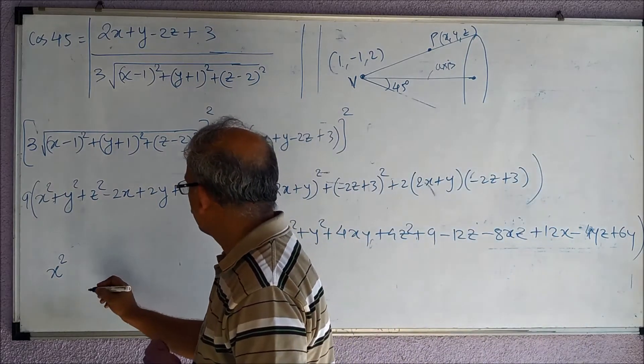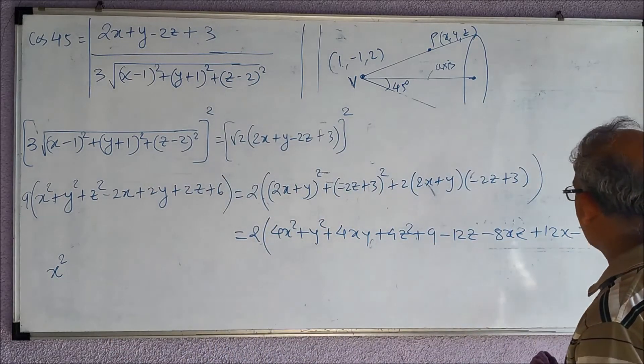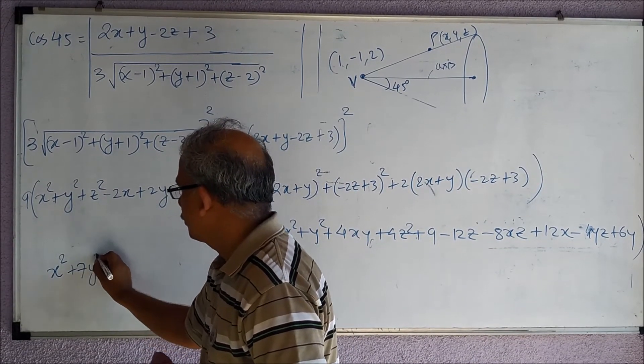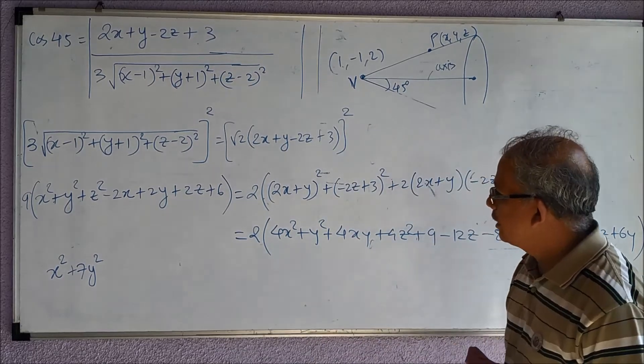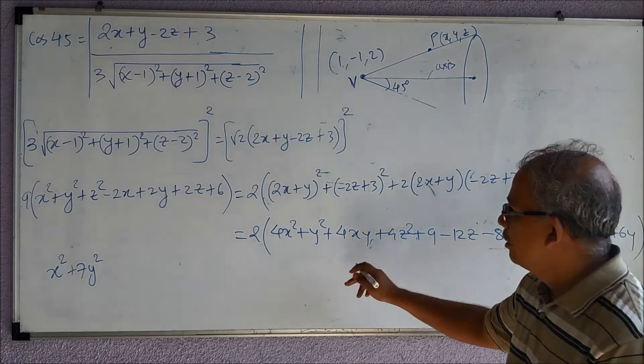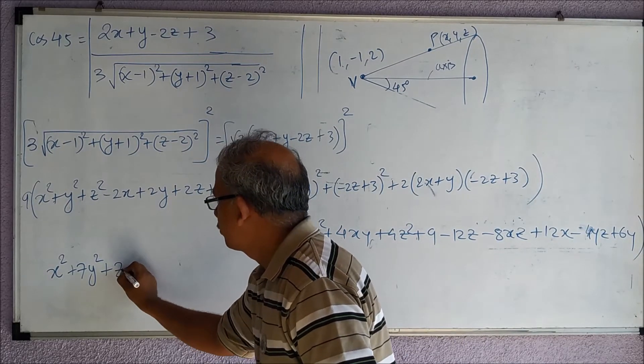Next, 9z², then here there is z², so 8, so again z². Now see that these terms are not there on the left-hand side, so I can directly take them.